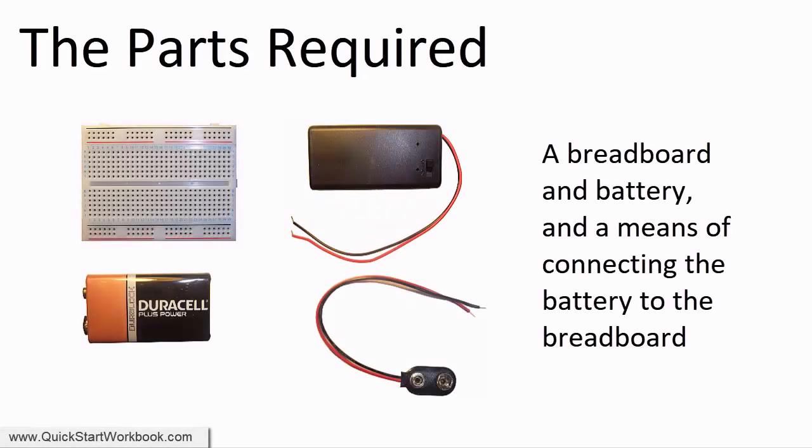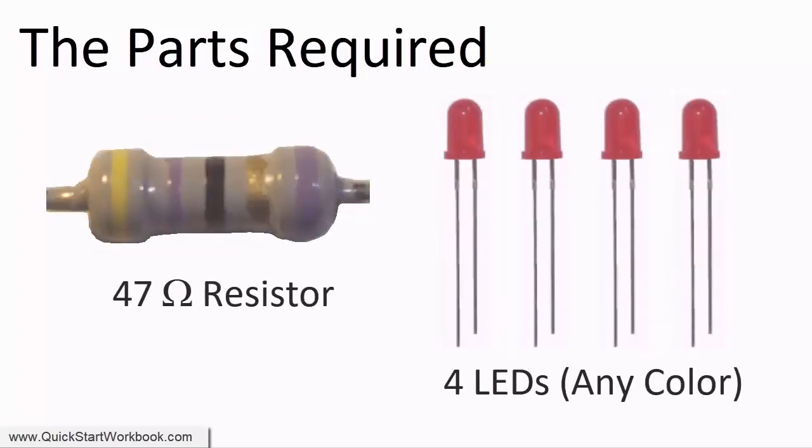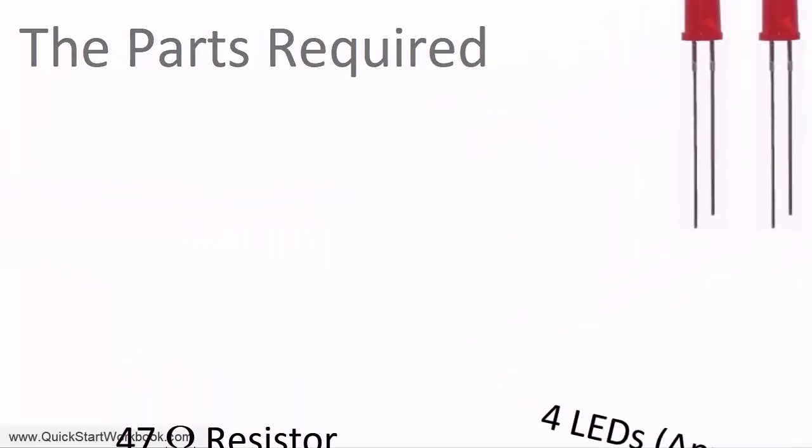So what parts do we need? We need a breadboard, a 9 volt battery and a means of connecting the battery to the breadboard. We also need a 47 ohm resistor and 4 LEDs, any color, but I'll use red ones here. So let's design the circuit.